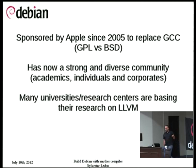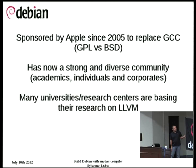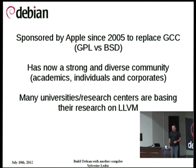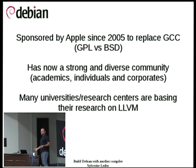Since he had a pretty good idea, people from Apple contacted him in 2005, hired him, and built a team around LLVM. The goal for Apple, as you know, is that they are not very open-source friendly. They were trying and they succeeded in building an alternative to GCC with another license which is way more convenient for them. Basically, LLVM is BSD, Clang is the same, and most of the tools in the ecosystem are under this license too.